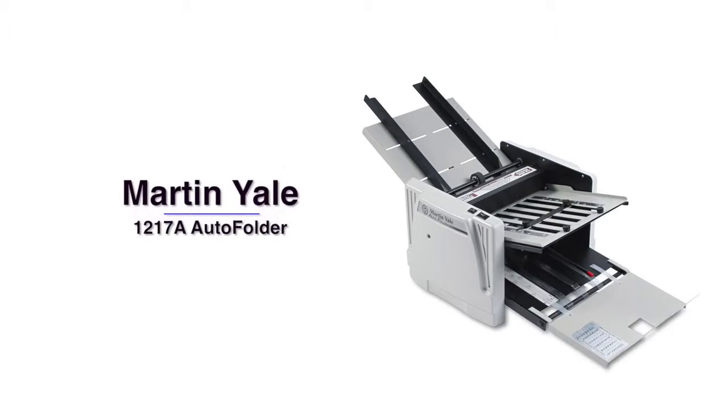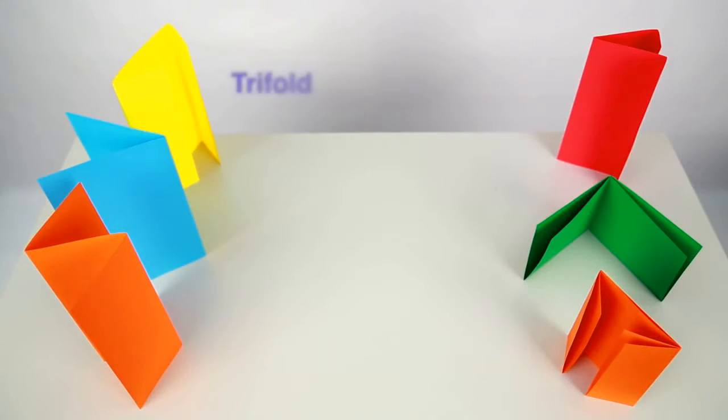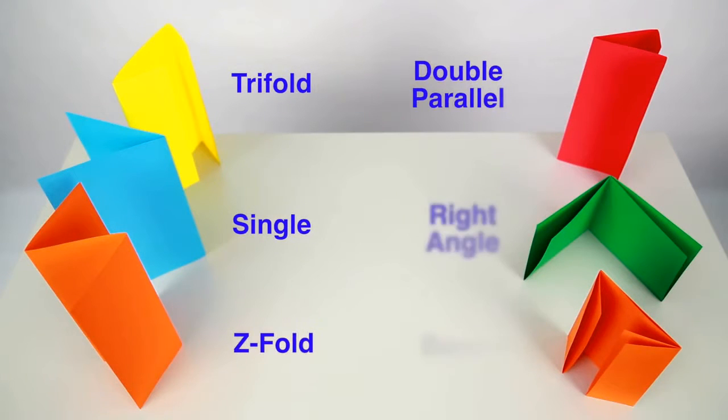Hi, I'm Jessica and this is the Martin Yale 1217A Auto Folder. The 1217A can perform six different types of paper folds, each with their own unique applications.